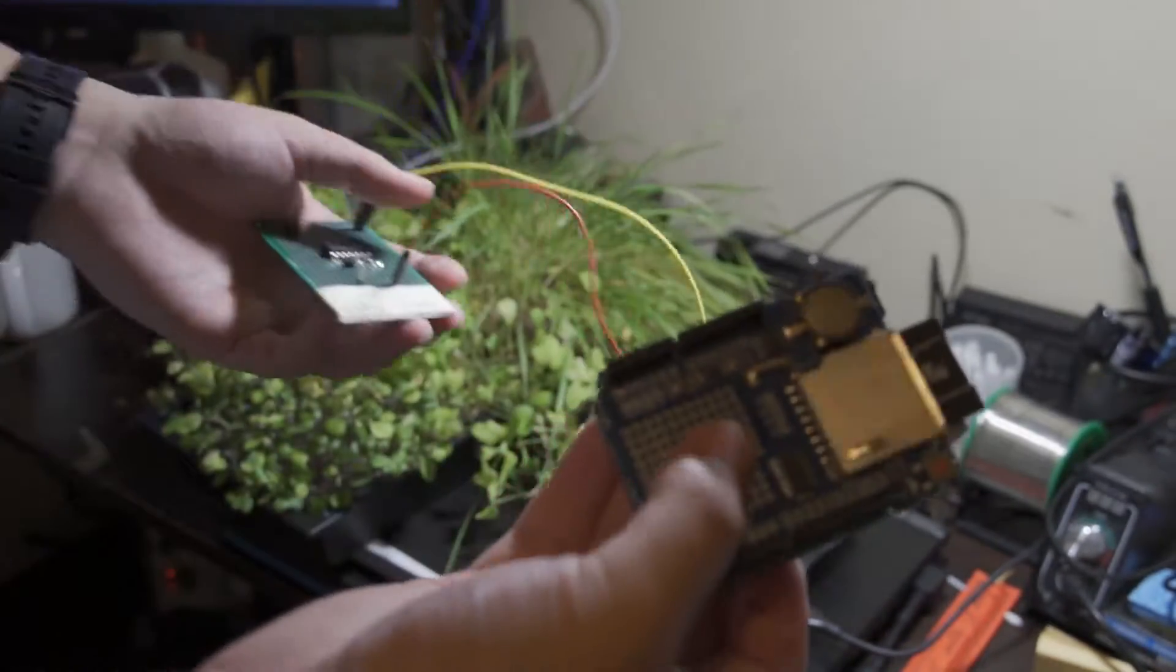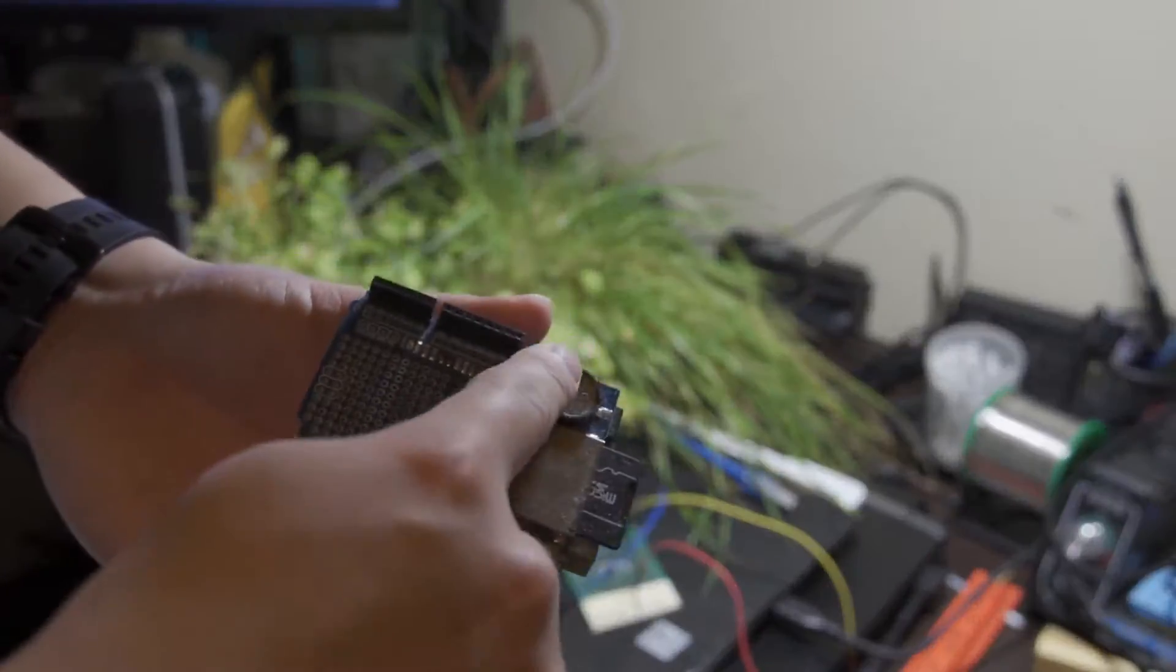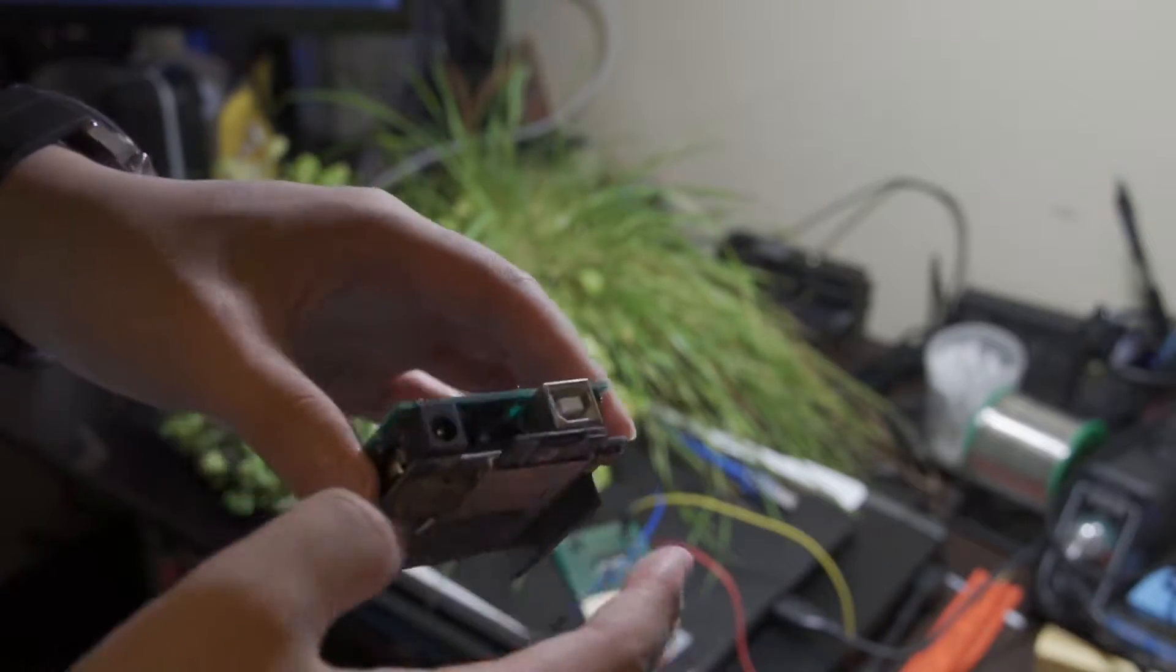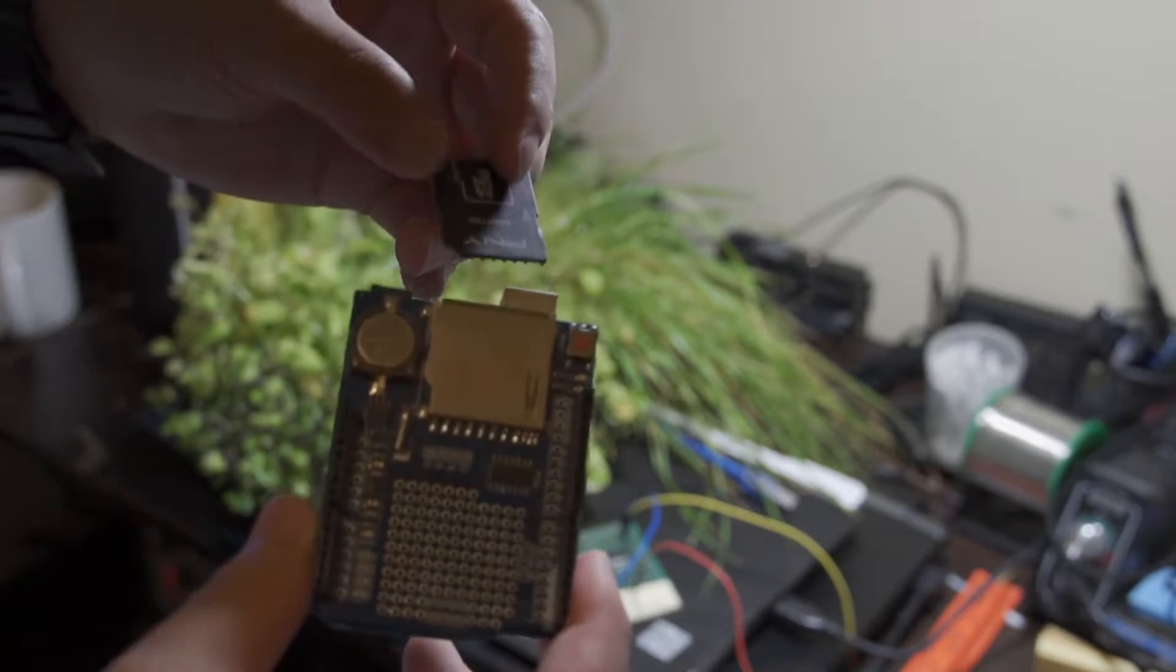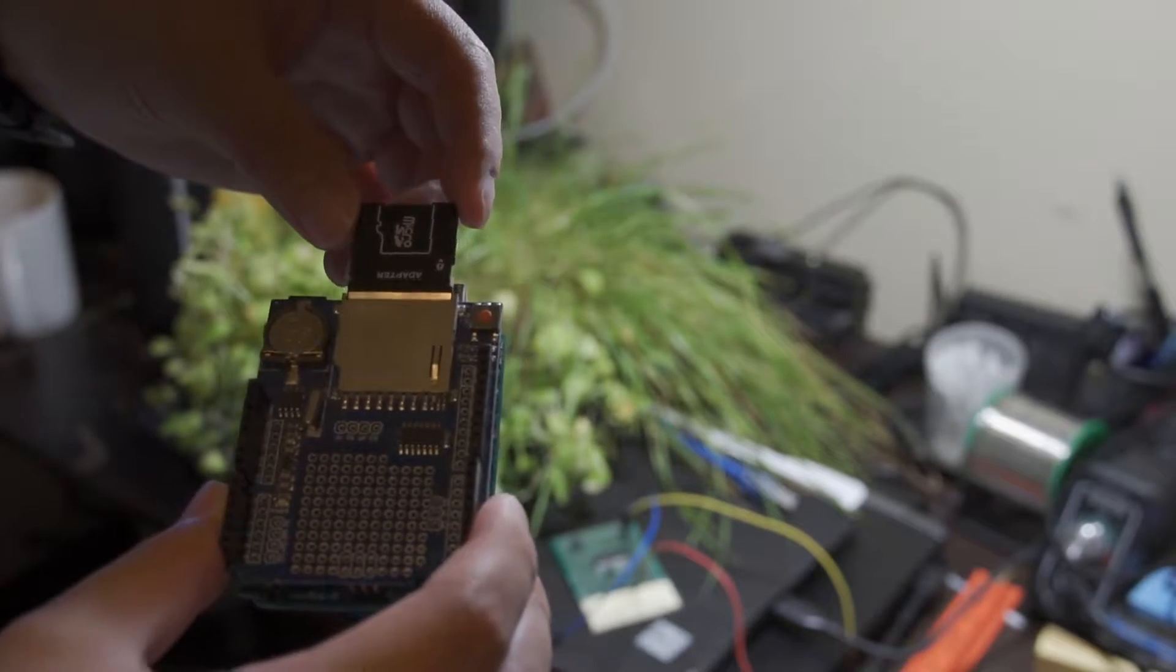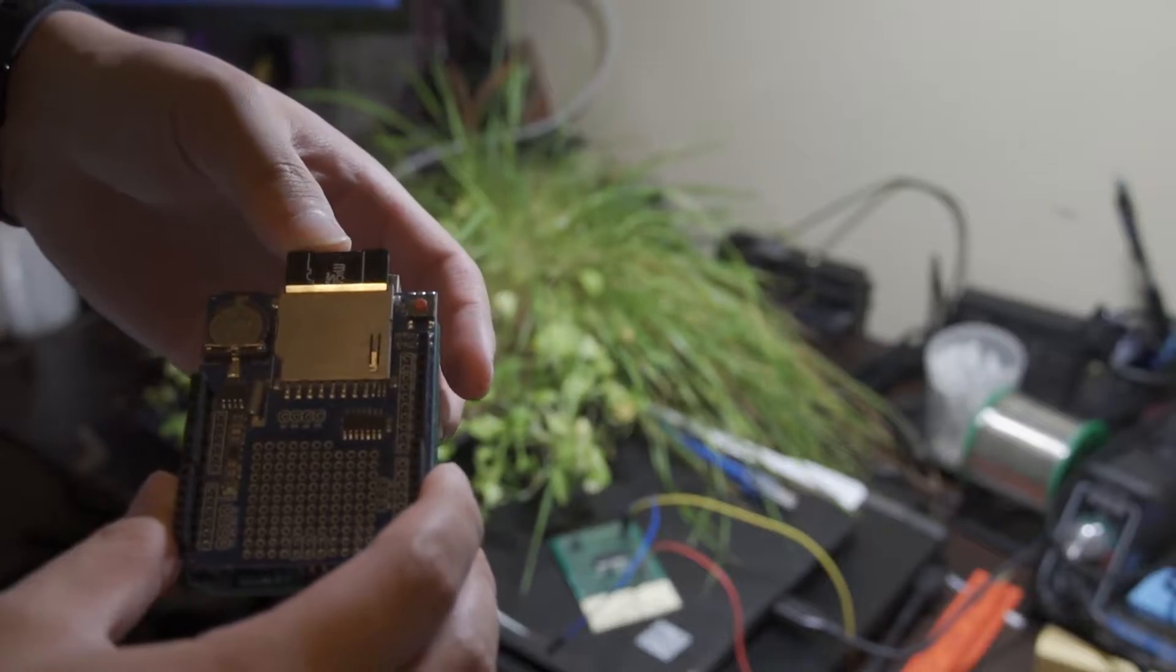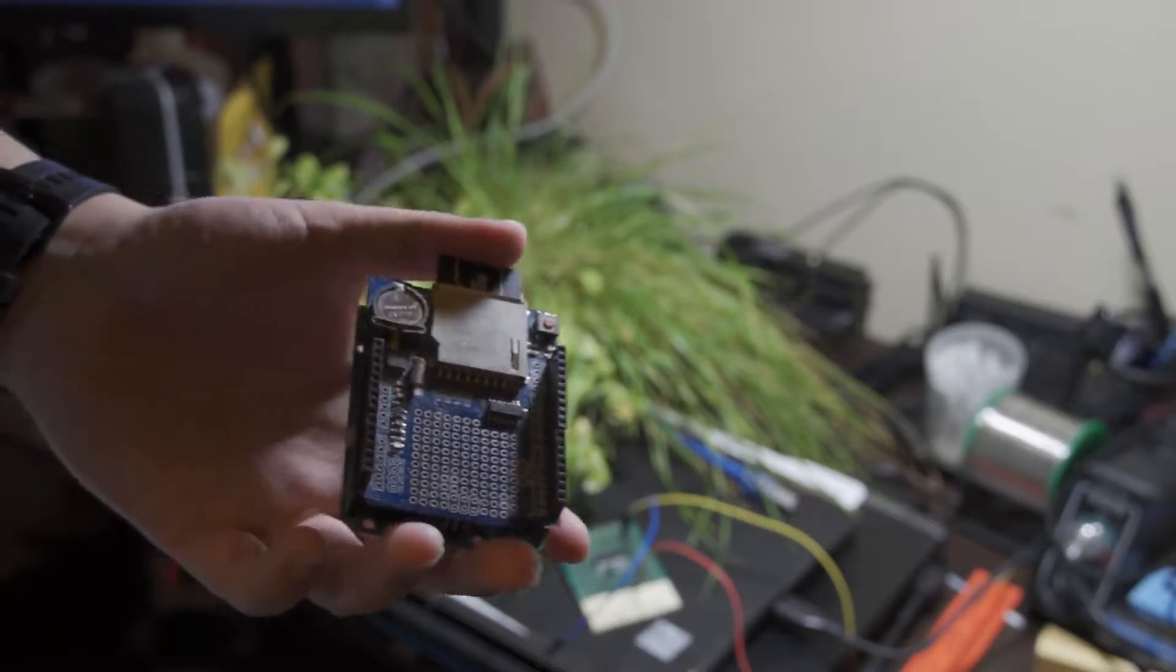So now this is the board. It has the SD card shield and an Arduino under it. For the SD card, you can pick anyone you like. Just make sure you format it correctly.